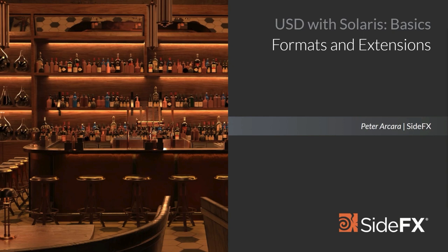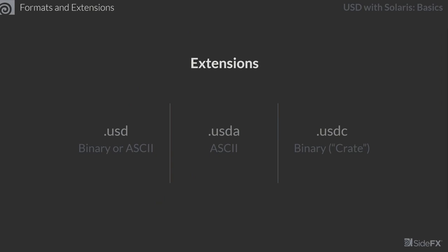Now let's look at the formats and extensions available in USD. The three extensions are .usd, .usda, and .usdc. You can add any of these to your save path in a USD export node. With .usd, it defaults to binary but can also be ASCII. With .usda, it's always an ASCII text file. With .usdc, it's always a binary or crate file. Keep these options in mind when choosing your save path.